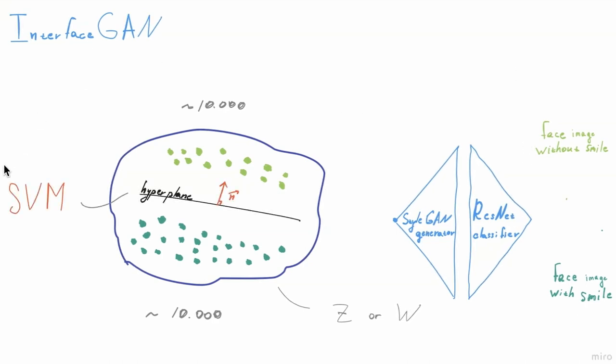Then, we can use a support vector machine approach to find a hyperplane that can separate these two sets of points. The normal vector to this hyperplane is our editing direction for attribute smile.